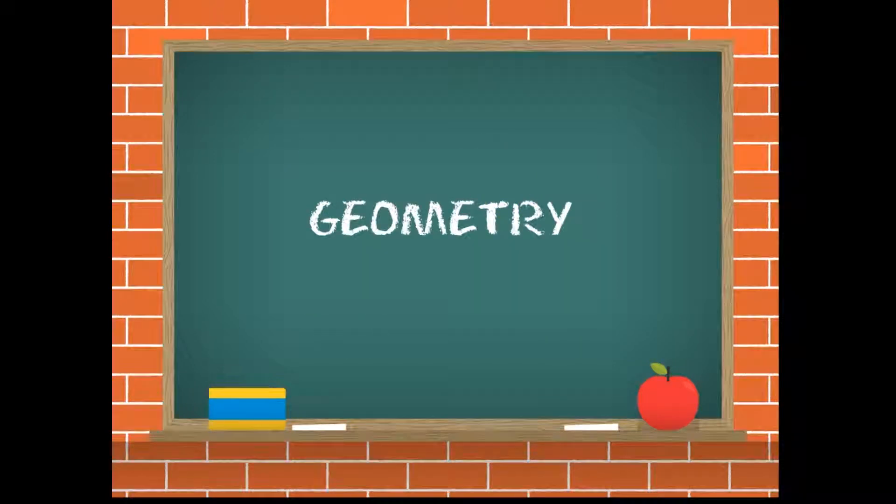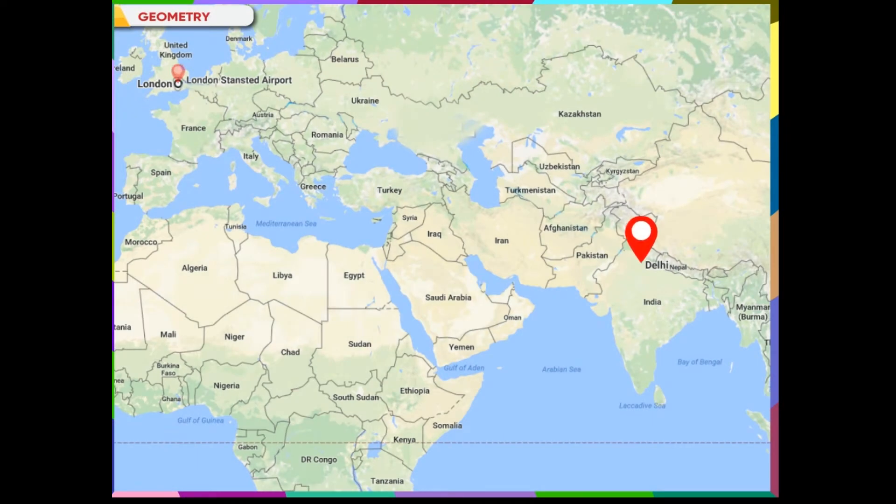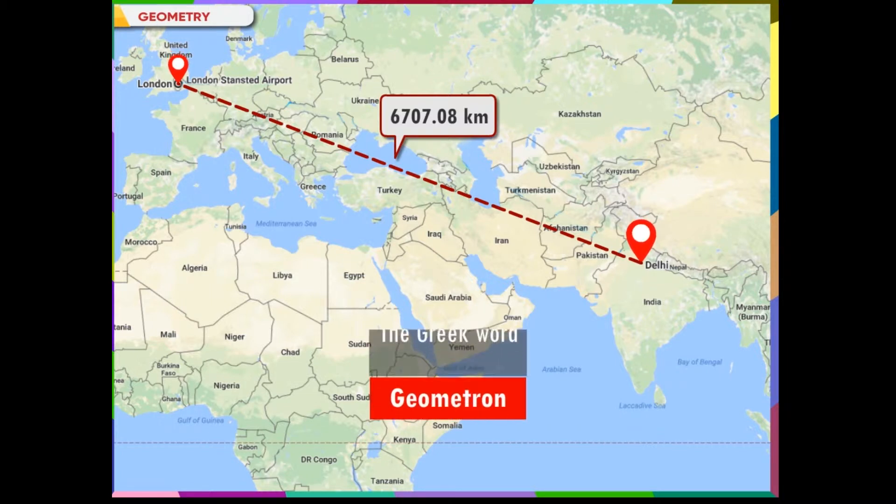Geometry: Point, Line and Ray. The most practical branch of mathematics is geometry. The term geometry is derived from the Greek word geometron. It means Earth's measurement.